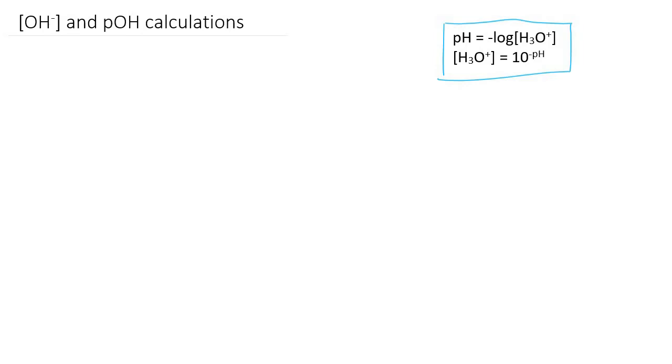So pOH is just a measure of how basic something is, it's really just exactly the opposite of pH. You can measure pH or pOH on any solution, and if it has a high pH, it will have a low pOH, and vice versa.